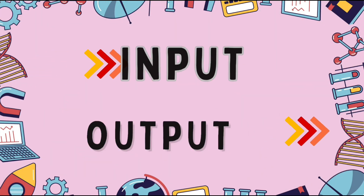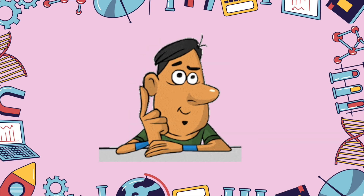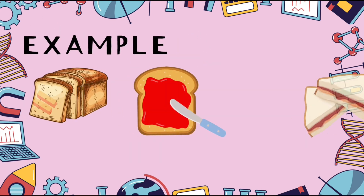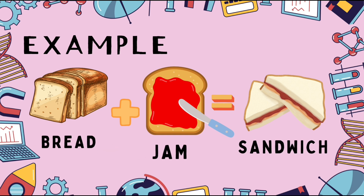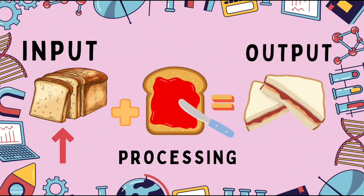With the help of an example — we all love sandwich, but did you ever wonder how it's made? First, we take bread and apply jam over it, and we get a delicious sandwich. In this process, bread is our input, applying jam is processing, which results into a sandwich as an output.